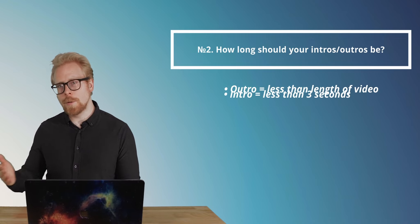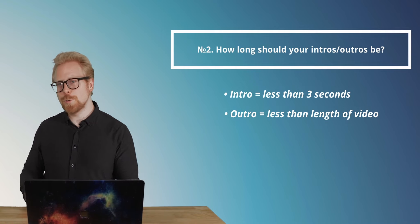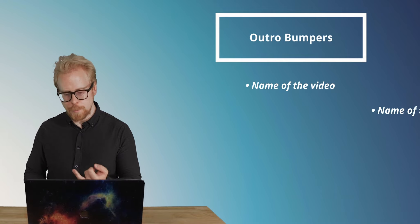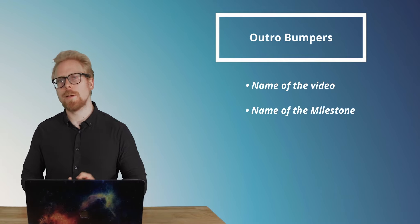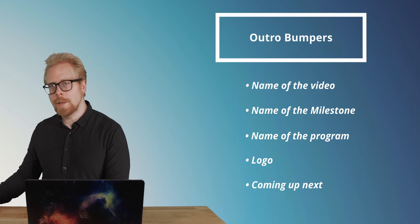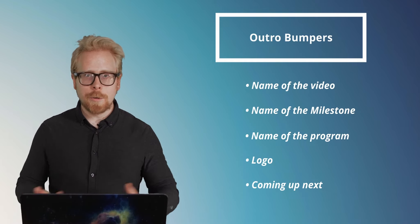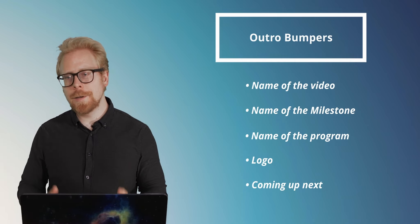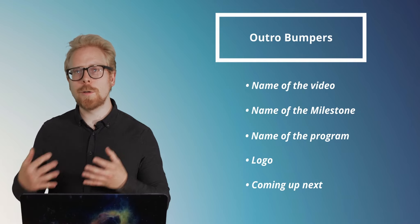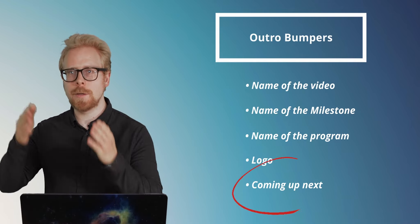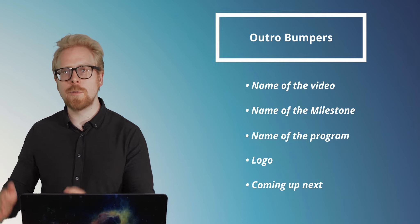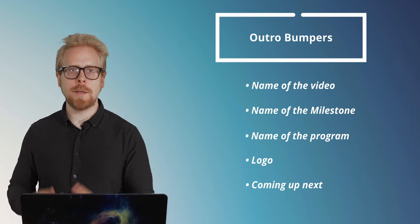You probably don't want the outro to be longer than the video itself. In the outro, you can put all sorts of things: the name of the video, the name of the milestone, the name of the program, your logos, or what's coming up next. Out of all those things, the most important thing to include is what is coming up next — the rest is kind of dead space. If you want to include one thing, add 'the next video is going to be X' or 'the next module is going to be X.'